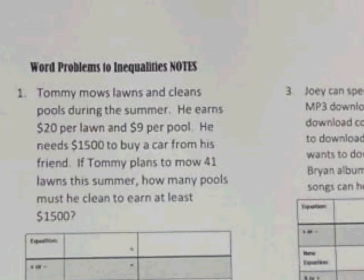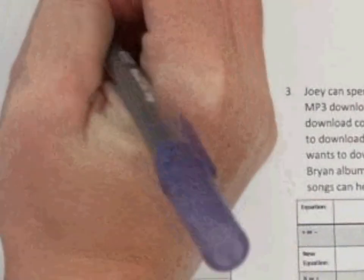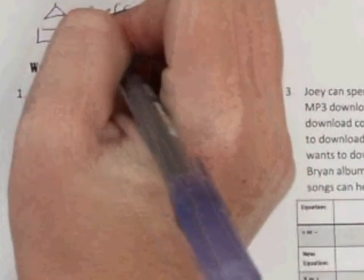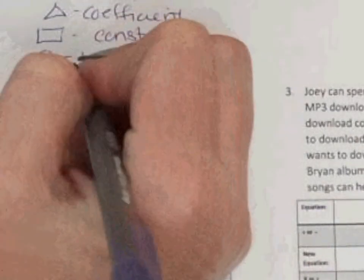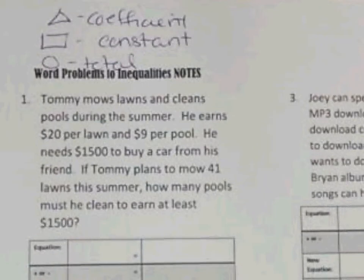The first thing — and you have heard us mention a coefficient before — we are going to triangle the coefficient. We are going to box or draw a rectangle around the constant, and the constant is that thing that no matter what, it's still going to be there. And then we are going to circle the total.